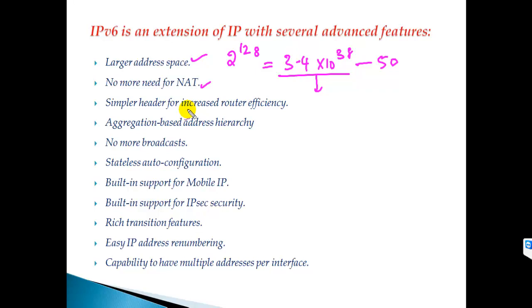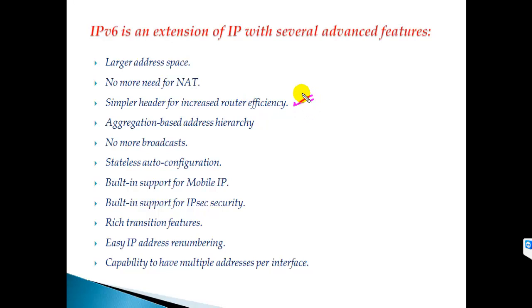Because of this large address space, Network Address Translation is not required in IPv6 — at least for the next 50 to 60 years. The header format is also more simplified, which increases efficiency on routers. Addressing is designed in an aggregation-based hierarchy. There is also no broadcast in IPv6 — unlike IPv4 which has a broadcast ID to send packets to all devices in a network. We'll get into the categories of addressing — unicast, multicast, anycast, and broadcast — in the next section.